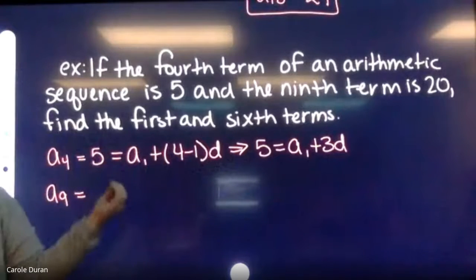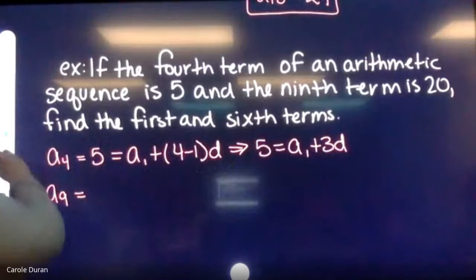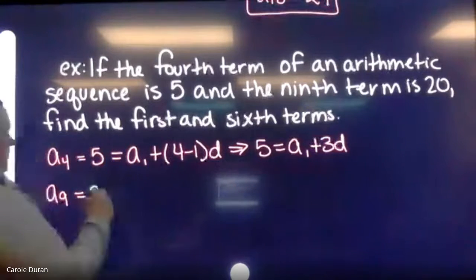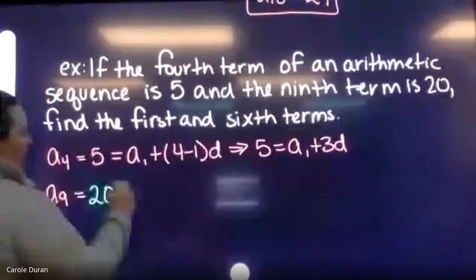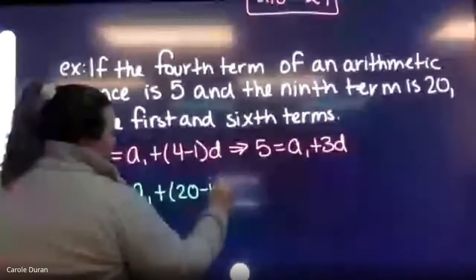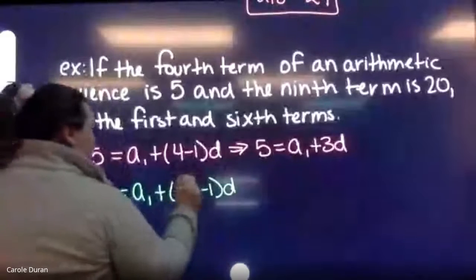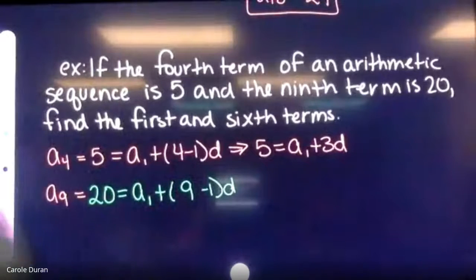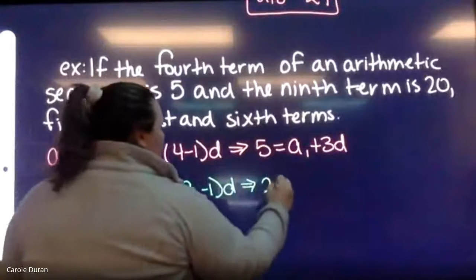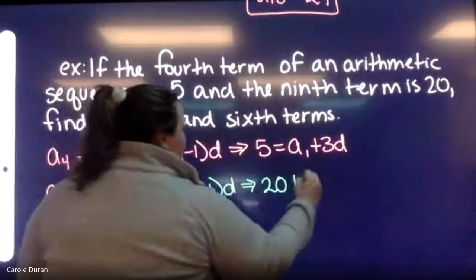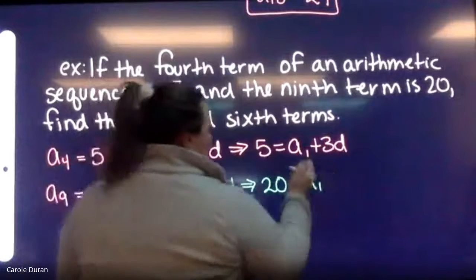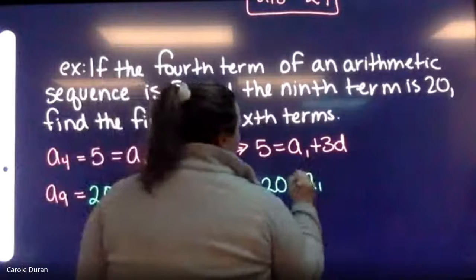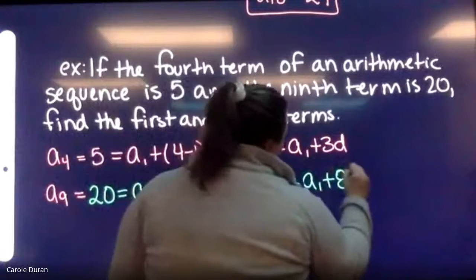For the ninth term: 20 equals a(1) plus nine minus one times d, which simplifies to 20 equals a(1) plus 8d.